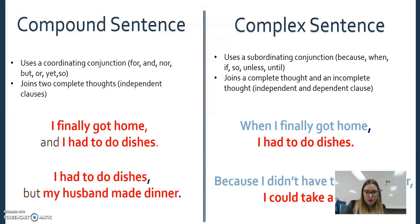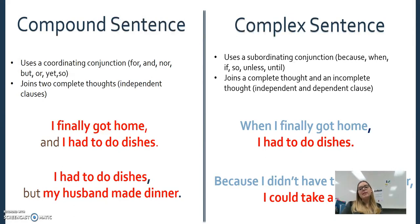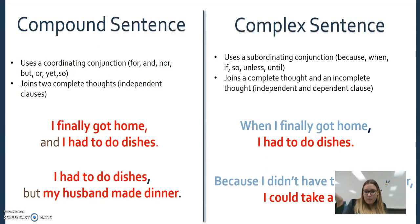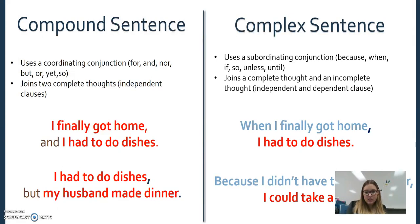If I have two sentences — 'I finally got home' and 'I had to do the dishes' — these are two complete thoughts. Or: 'My husband made dinner' — these are complete sentences. I can use a coordinating conjunction to join those two complete thoughts together. Alternatively, I can have a complex sentence, which has two different types of clauses: a dependent clause and an independent clause. For example, 'when I finally got home' is dependent — it's not standing by itself. 'I had to do the dishes' is independent, so 'when I finally got home, I had to do the dishes' is a complex sentence linked by the subordinating conjunction 'when.'